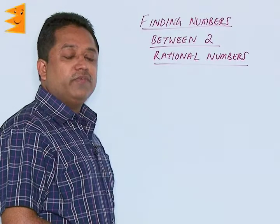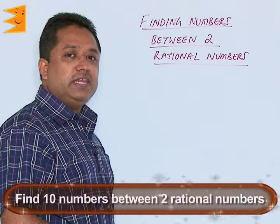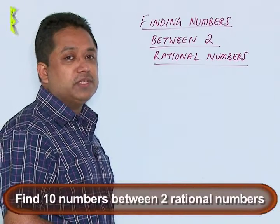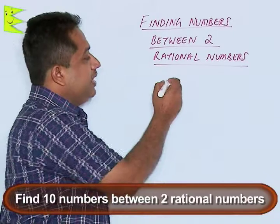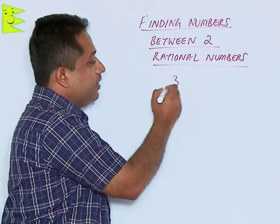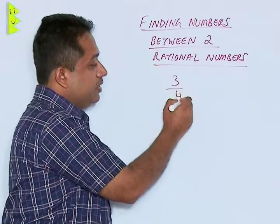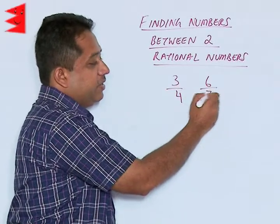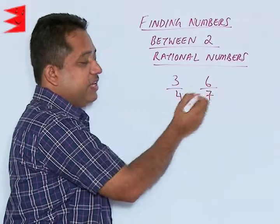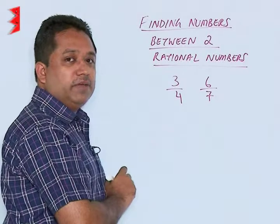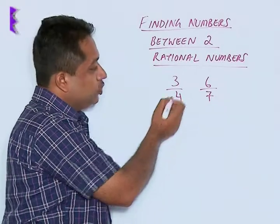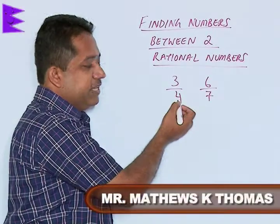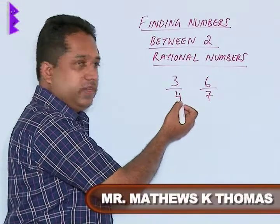Let us take a question where we have to find 10 numbers between 2 rational numbers. See the example here: 3 by 4 and 6 by 7, and we have to find 10 numbers between them. We are going to take the LCM of 4 and 7.